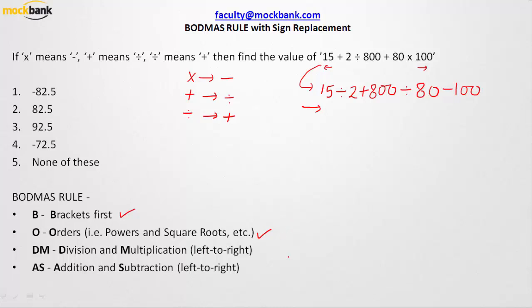In order of ranking, the highest priority goes to brackets. Wherever you see brackets, solve them first. Once brackets are done, solve orders — all square roots, cube roots, powers, and so on. Once those are done, division and multiplication should be given priority over addition and subtraction. So division and multiplication are solved first, then addition and subtraction.